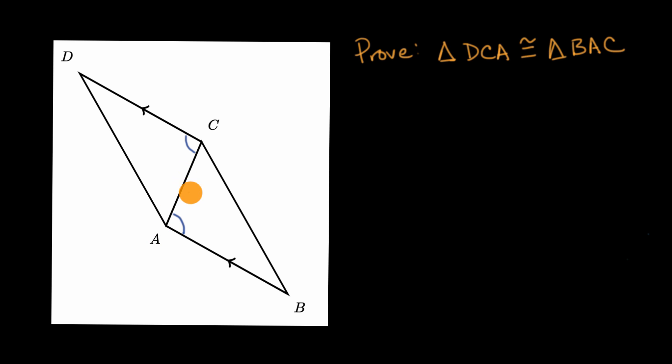We also know that both of these triangles, both triangle DCA and triangle BAC, they share this side, which by reflexivity is going to be congruent to itself. So in both triangles we have an angle and a side that are congruent, but can we figure out anything else?